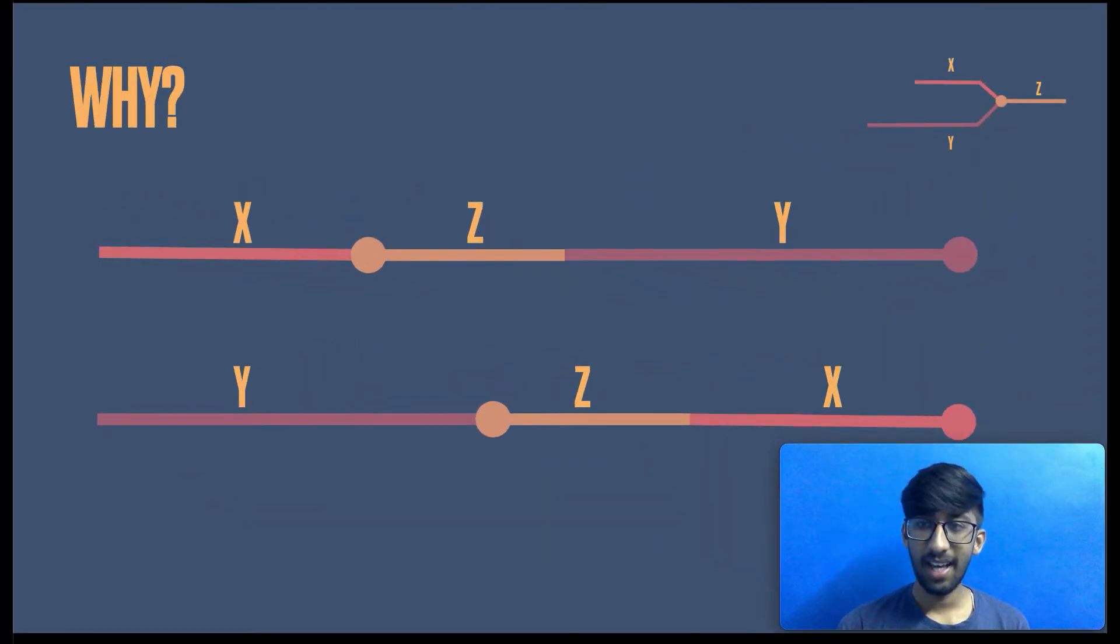Fireboy starts at the X arm, goes to the end of Z and then goes to Y. So, cumulatively, it has travelled a distance of X plus Z plus Y. Similarly, watergirl has travelled a distance of Y plus Z plus X. The total distance is same and they are moving at the same speed, that is one node per second or one node per iteration. Hence, they have travelled the same distance at the same speed. Hence, they will meet at the same point at the same time, which is the intersection point in this case.